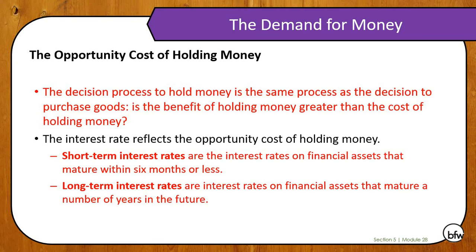There are two types of interest rates you need to understand. Short-term interest rates are interest rates on financial assets that mature within six months or less — things like your savings account, a short-term CD, or a money market. Long-term interest rates are interest rates on financial assets that mature a number of years into the future, like long-term bonds — for example, a 10-year United States Treasury note, meaning that bond matures in 10 years.